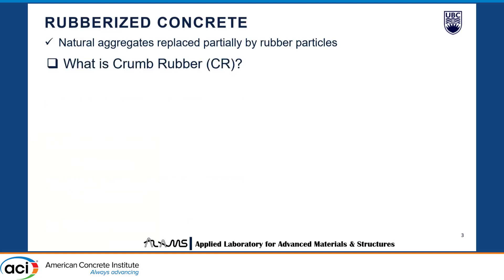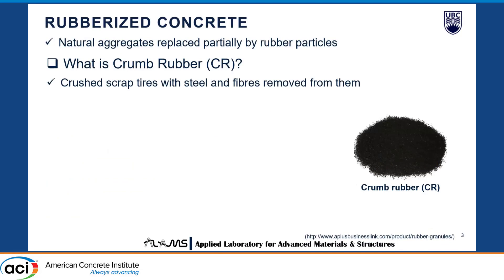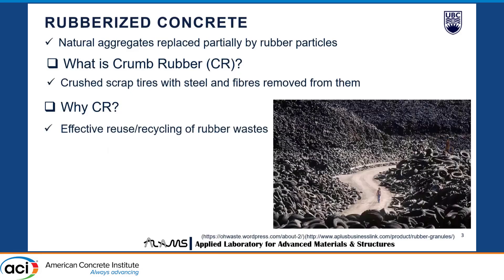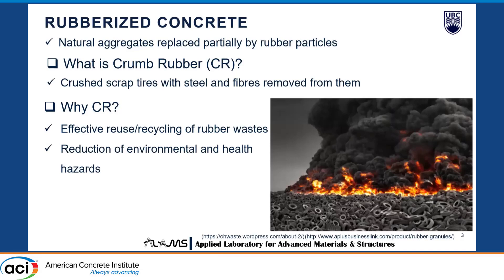What is crumb rubber? It's basically crushed scraped tires with the steel and fibers removed from them. Why should we use crumb rubber in concrete? About 3 million tons of tires are disposed in landfills every year worldwide, whereas this can be effectively reused or recycled as aggregates in concrete. Also, tire dumps pose a serious threat of fire hazard and potential ground for breeding insects — there have been fire breakouts in Ontario and Iowa. And of course, this will help in reducing the demand on natural aggregates, which is a more sustainable option.